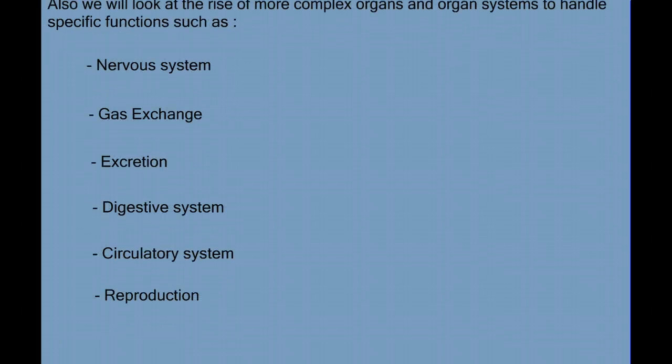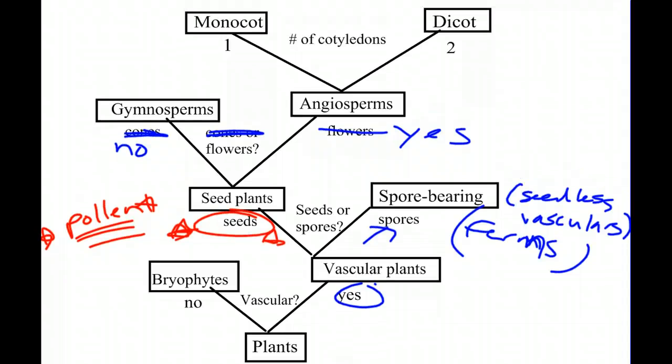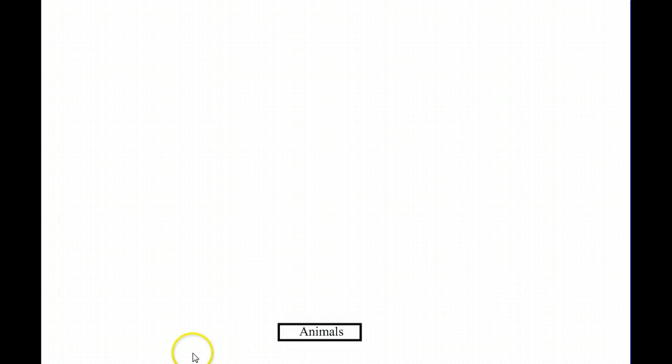Before we begin, I want you to have out your note packet so you can pause the video and write down notes as we proceed. Also, we will be building a classification tree along the way, similar to what we built in plants. So I want you to have a blank piece of paper. As we move through, we can build a classification key with animals — you should start with this at the bottom, and we'll continue to build up a chart for the diversity of animals.